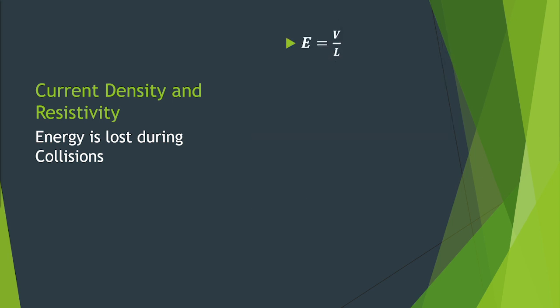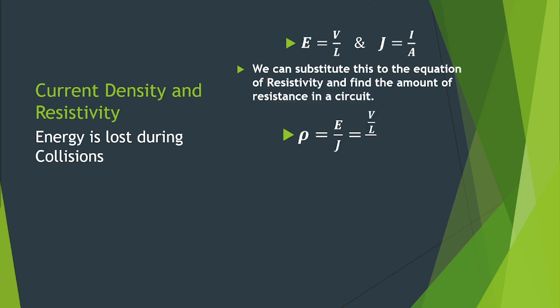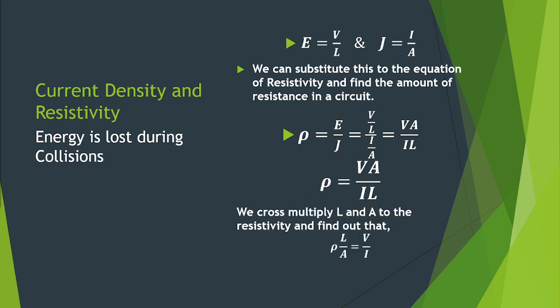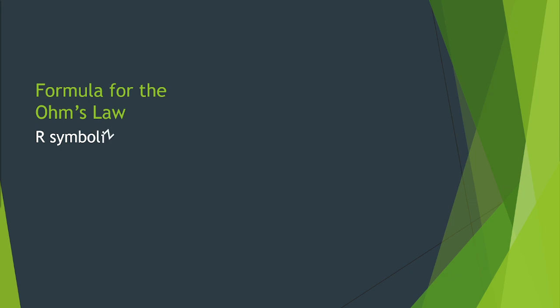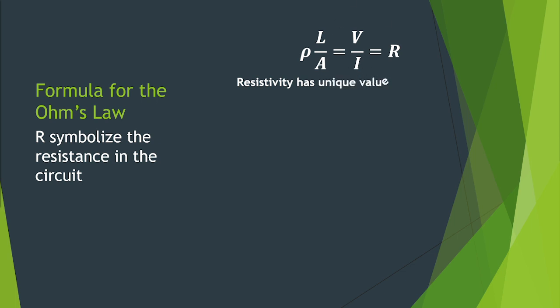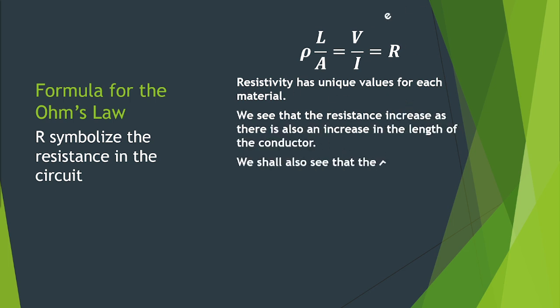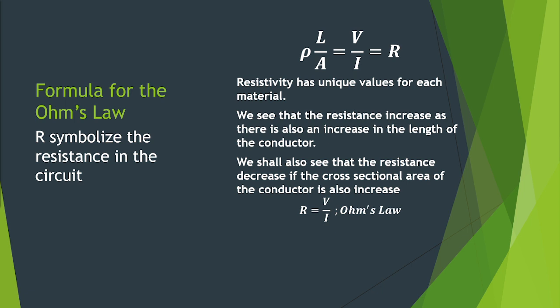We can substitute this to the equation of resistivity and find the amount of resistance in a circuit. We can see that the resistivity rho is equal to V times A over I times L. We cross multiply L and A to the resistivity and find out that rho times the ratio of length L over area A is equal to V over I which is equal to the resistance R. This is also the formula for the Ohm's law. R symbolized the resistance in the circuit. Resistivity rho has unique values for each material. We see that the resistance increase as there is also an increase in the length of the conductor. We shall also see that the resistance decrease if the cross-sectional area of the conductor is also increased. The formula for the Ohm's law is resistance R is equal to V over I.